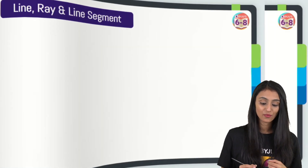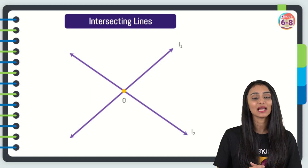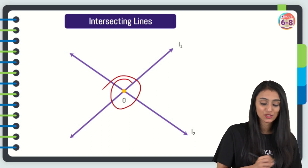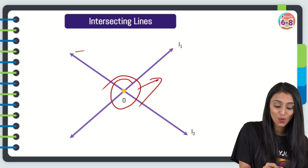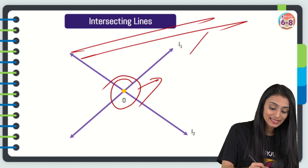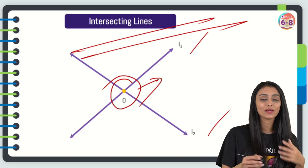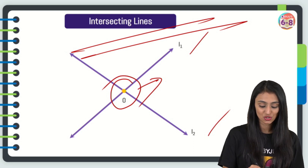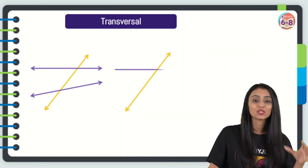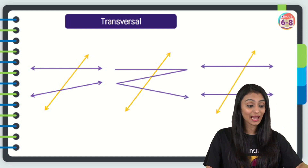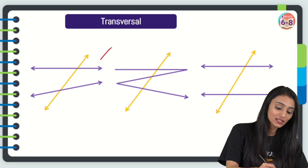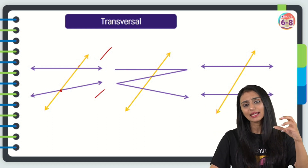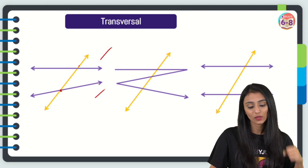What if two lines meet at one common point — they share one common point? That common point, like O here, is called the point of intersection. These are called intersecting lines, like lines L1 and L2 here, and O is the common point they share. Moving to the next terminology: a transversal is basically a line that intersects two or more lines at distinct points. The line represented in yellow is called a transversal.